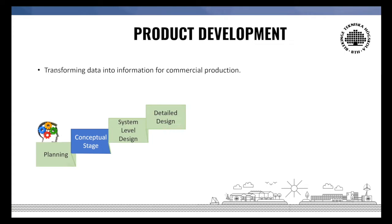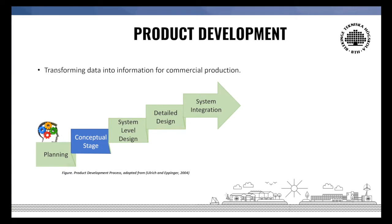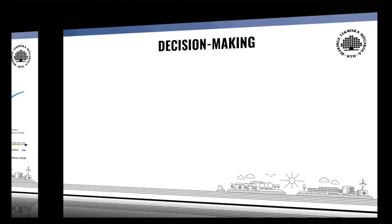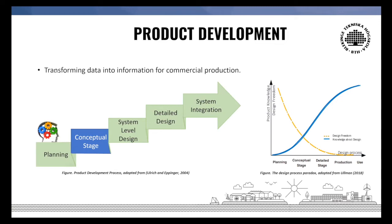The third stage is the detail design stage, which includes the complete specification of geometry, materials, and tolerances of the unique parts in the product, and also identifying standard parts to be purchased from suppliers. The final stage is the system integration stage, which includes construction and evaluation of pre-production versions of the product, training the workforce, and identifying remaining problems in the production process. However, product development is essentially a process of making decisions about a product while building knowledge along the stages — as knowledge about the design grows, the design freedom shrinks.